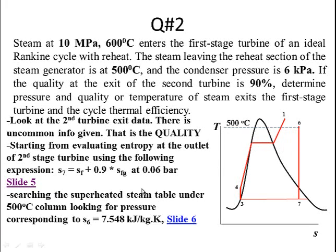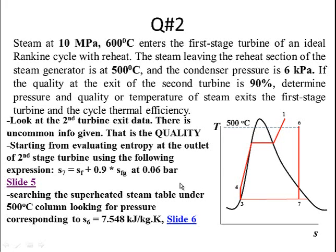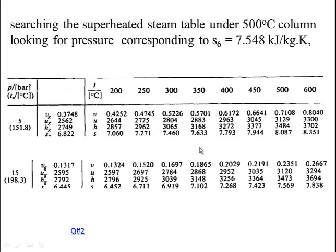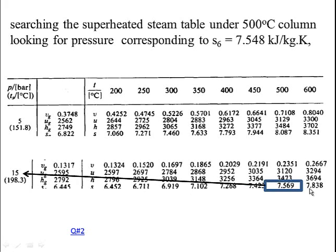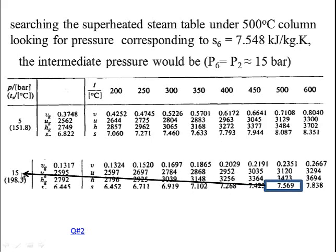To find the pressure of state 6, we go to the superheated steam table, since state 6 is in the superheated region. Under the 500°C column, we look for entropy value 7.548. In the superheated table at 500°C, we find an approximate entropy of 7.56, which we use as an approximation. The corresponding pressure is 15 bar. This is our approximated entropy and the pressure corresponding to it.